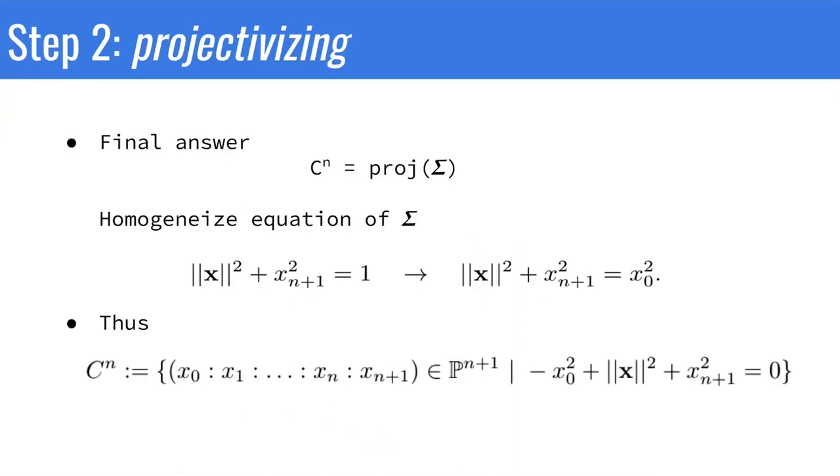Conformal space will be the result of embedding sigma in projective space. When you homogenize the equation for sigma, you get the description of C^n that you were looking for.